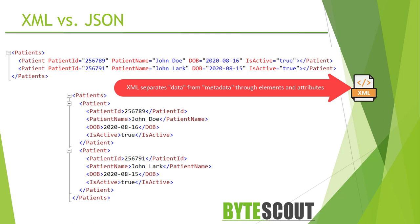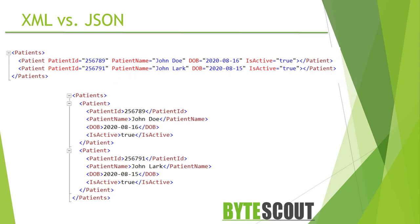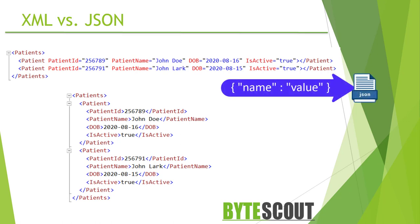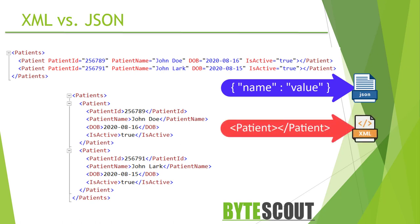XML separates data from metadata via the use of elements and attributes, while JSON does not have such a concept. Another key difference is the addressing of values: JSON has objects with a simple key-to-value mapping, whereas in XML addressing happens on nodes.